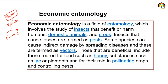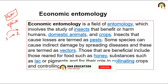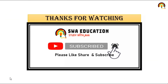Those that are beneficial include those reared for food such as honey, substances such as lac or pigment, and for their role in pollinating crops and controlling pests. कुछ insects honey produce करते हैं, कुछ pollination में help करते हैं, pigmentation में help करते हैं। कुछ beneficial भी होते हैं और कुछ harmful भी — उनकी study हम लोग economic entomology में करते हैं। Harmful और beneficial insects के बारे में हम next lecture में देखेंगे। I hope आपको यह lecture पसंद आया होगा। Please like, share and subscribe this channel, and if you have any query, you can comment down below. Thank you so much.